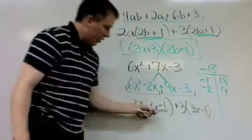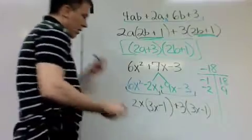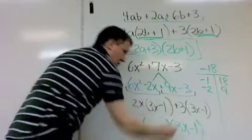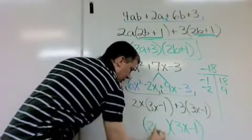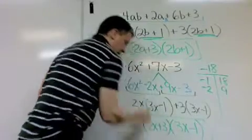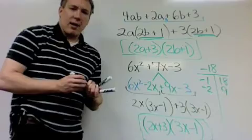And, lo and behold, look. Those are in common. So, my answer is what's in common? 3x minus 1. And, what is left when I take away what's in common? 2x plus 3. And, now, there we go. And, once again, if I were to multiply this out I would get that up there.